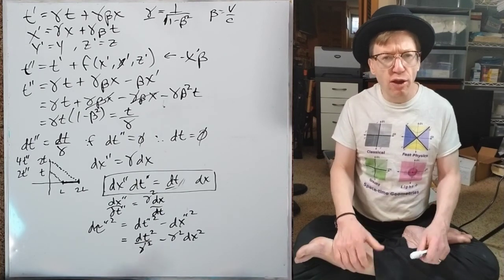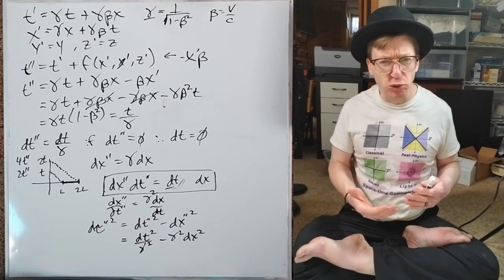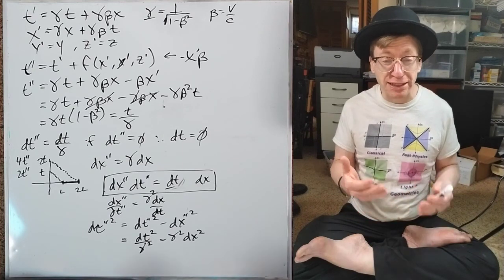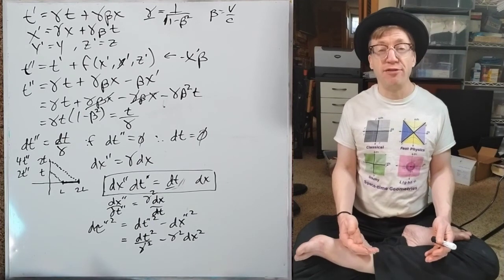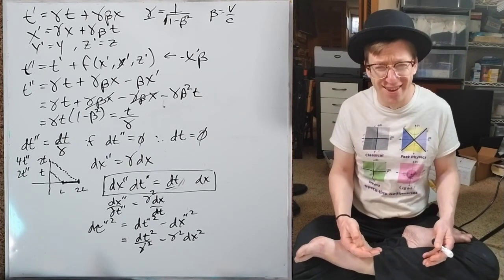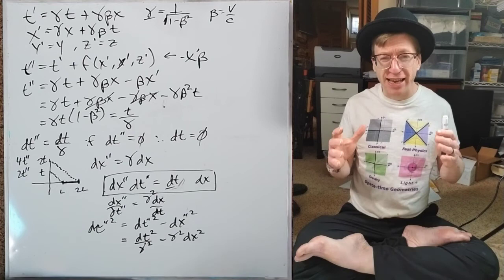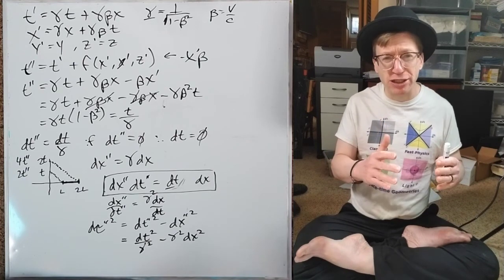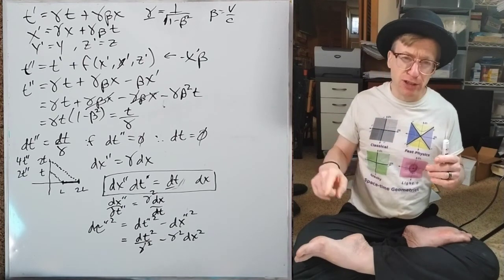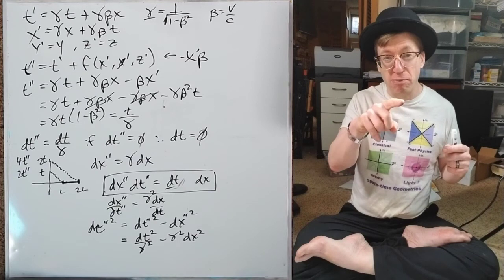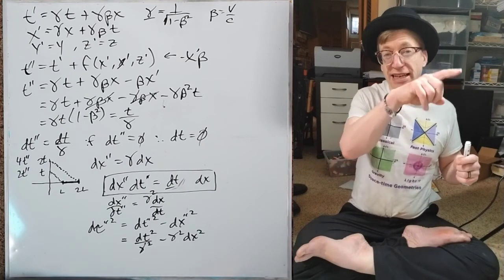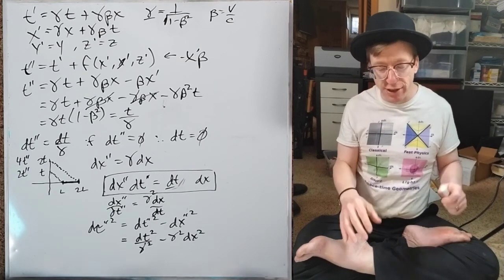In other words, I have a particular escape velocity here in this basement in Massachusetts. If I was at the top floor of this building, it would be ever so slightly less. It gradually changes as you move up and down in the gravitational field.